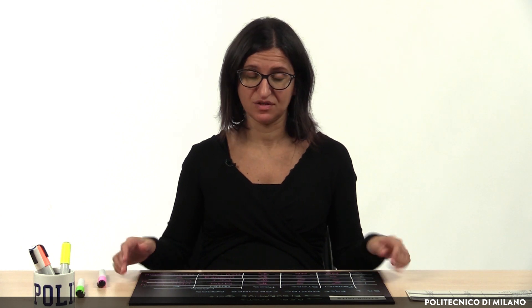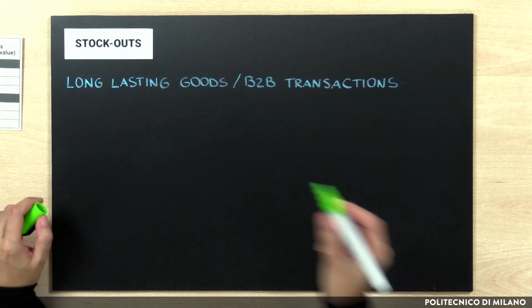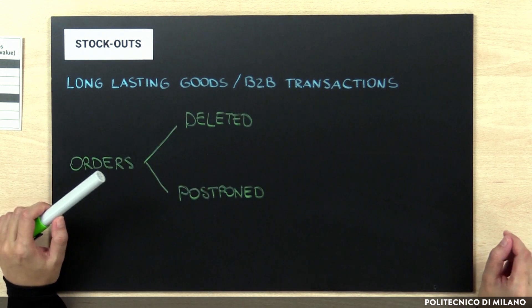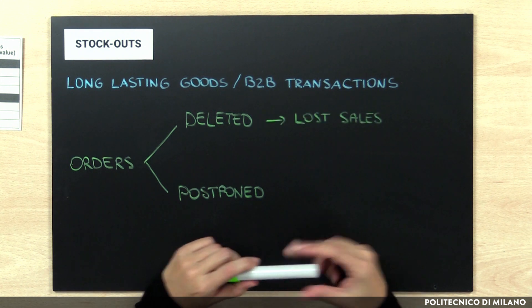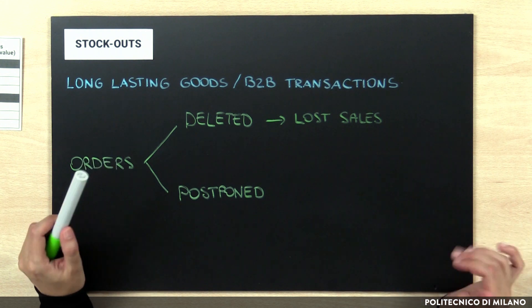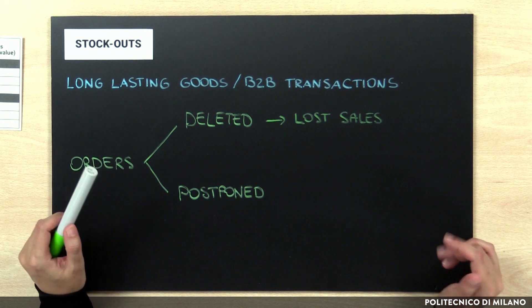Let's now consider the case related to long-lasting goods or B2B transactions. Two scenarios may occur if some products are not available: the order may be either deleted or postponed by the customer. If the order is deleted, the stock-out cost is related to the lost sales. More specifically, there is an immediate loss due to the current lost sale and a potential future loss, since the customer can prefer other suppliers in the future.